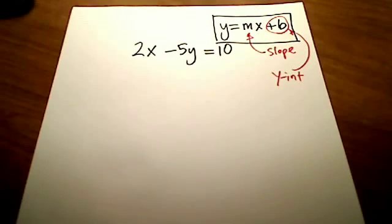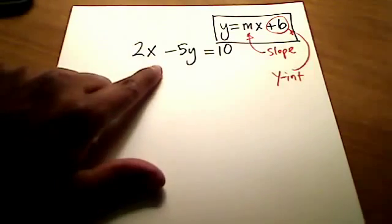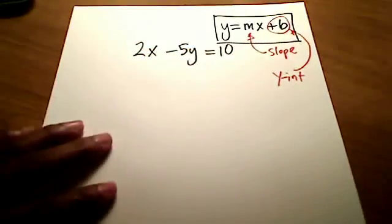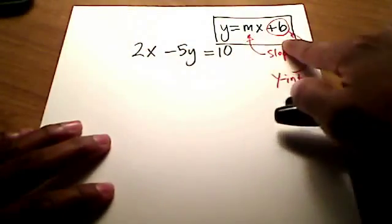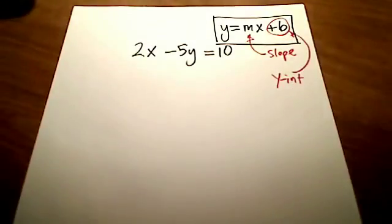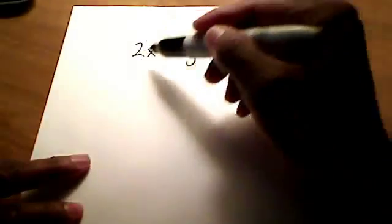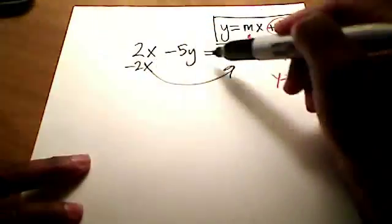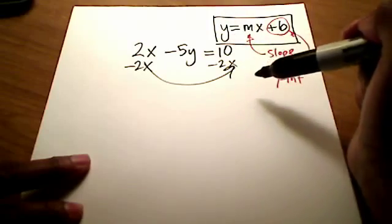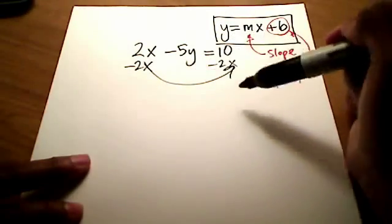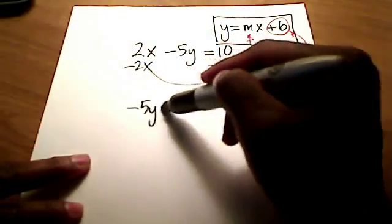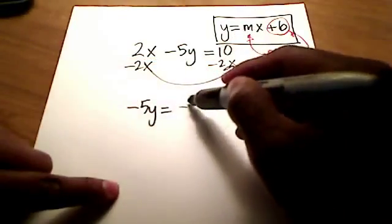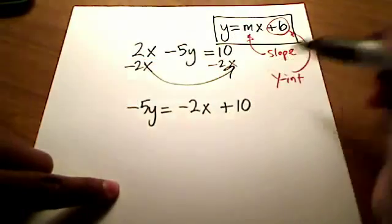So what we need to do to this equation, 2x minus 5y equals 10, is to make it look like this one over here. We want y all by itself and everybody else on the other side of the equation. So the first thing we're going to do is move this 2x over to the other side of the equation. To do that, we're simply going to subtract 2x from both sides. Have you ever heard the phrase change sides, change signs? So in this case, if I'm going to bring that positive 2x to the other side of the equal sign, it becomes a negative 2x.